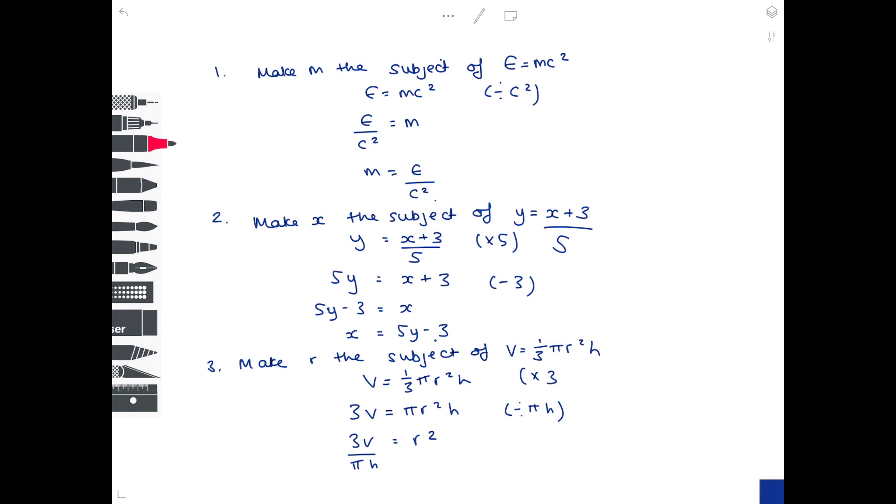So it becomes 3v over pi h equals r squared. And then lastly, it says make r the subject. It really does mean r by itself. So you need to square root both sides. And therefore you get a final answer, which is quite tricky. It's the square root of 3v over pi h.